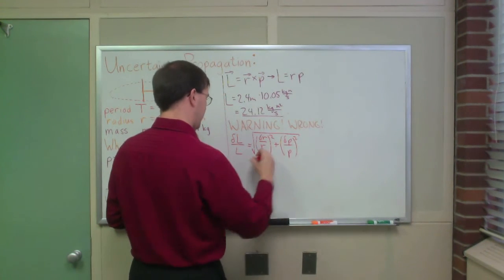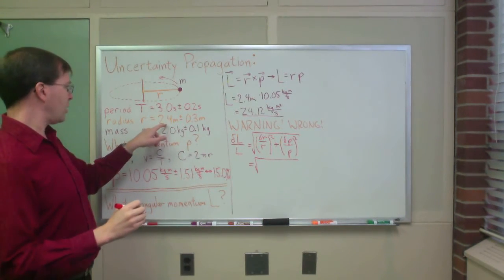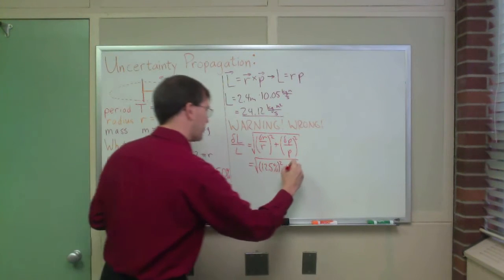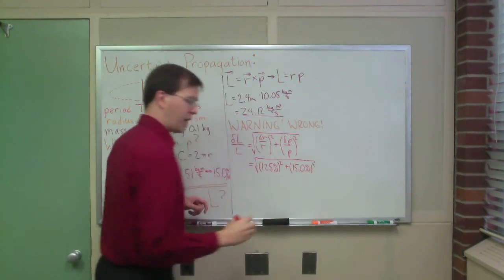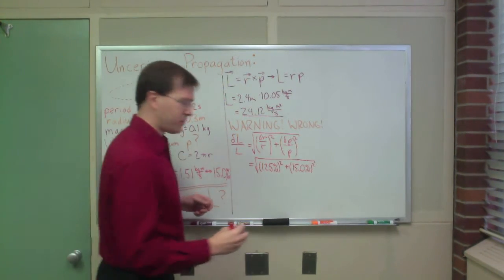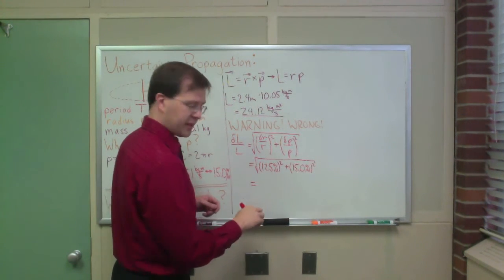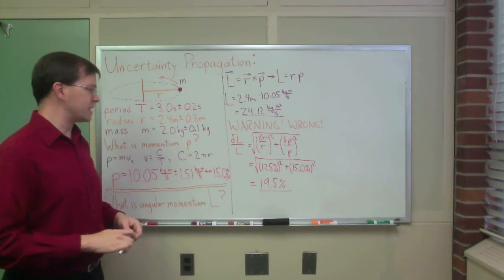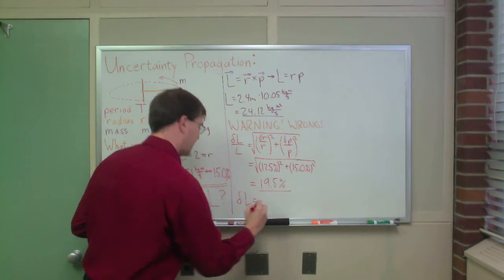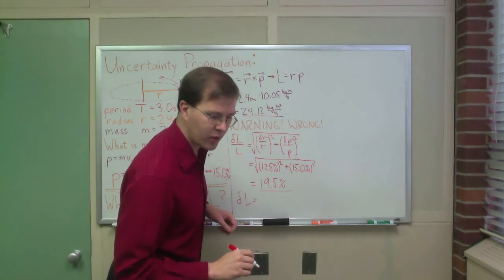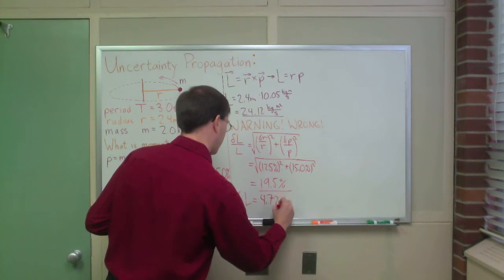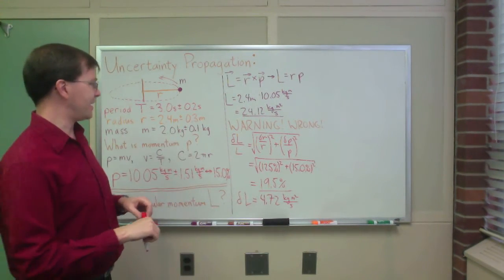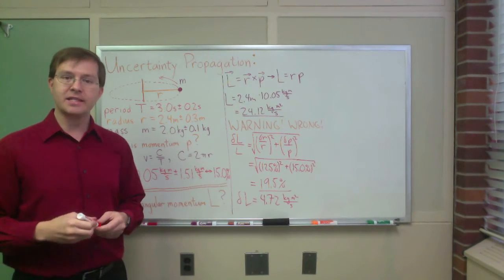Delta-R over R was 12.5%, and delta-P over P was 15.0%. Adding those in quadrature gives about 19.5% as my relative uncertainty in L. That means delta-L equals about 4.72 kg·m²/s. That seems to be the obvious way of doing this — and as I said, it is dead wrong.